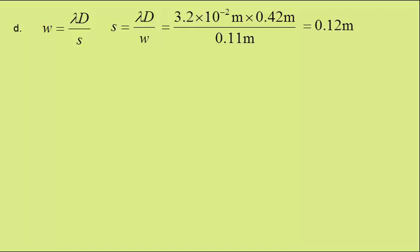Well, this is the formula: the fringe separation is wavelength times distance to screen over slit separation. Rearranging for slit separation, putting in the values, gives an answer of 0.12 metres. Our data is to two significant figures, so the answer should be to two significant figures.